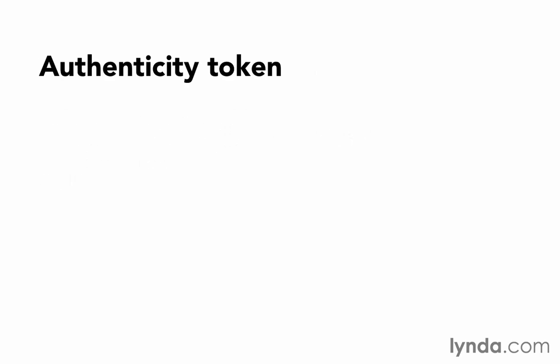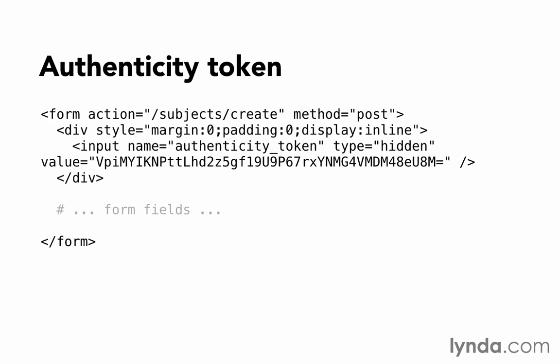Rails automatically adds a hidden field to every web form that it displays. The value of the hidden field is a unique token generated by the application and also stored in the user's session file — we'll talk more about sessions later. Then when the form is submitted, Rails knows what token to expect to arrive with it. It assures your application that this is a POST request from the form that your application generated, not coming from some evil link or third-party code pretending to be the same form.